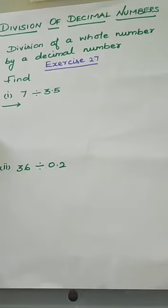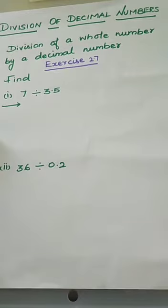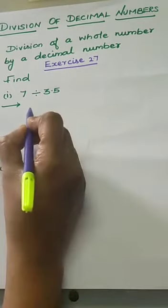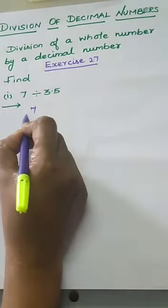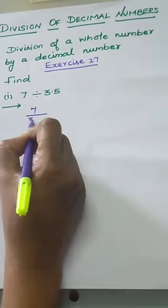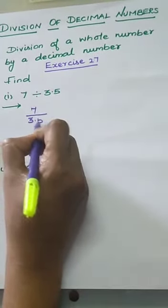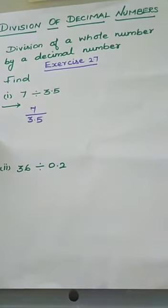Fifth problem, first subdivision: 7 divided by 3.5. The numerator value is a whole number and the denominator value is 3.5. How can we write this? 7 divided by 3.5. Ignoring the decimal point first — that is very simple.